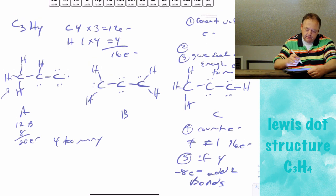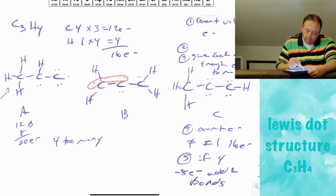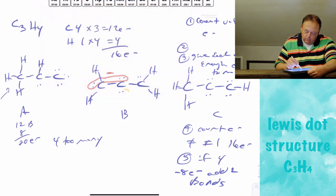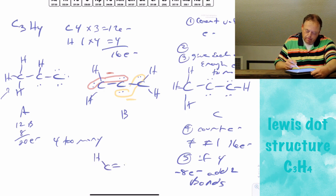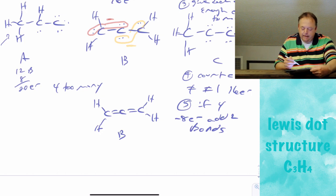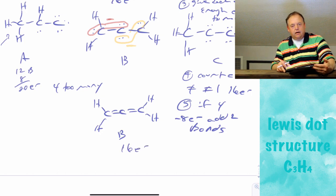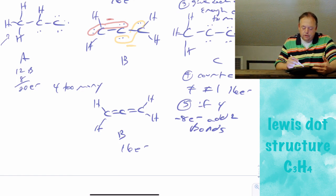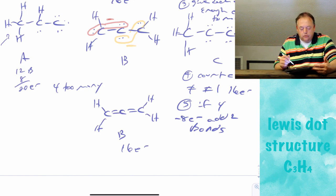Let's take structure B. We get rid of 4 lone pair electrons and add a bond, then get rid of another 4 electrons and add another bond between those 2 carbons. Structure B now has 8 bonds — 16 electrons total, the correct number. Each carbon has 4 bonds and 8 electrons, and each hydrogen has 2 electrons. So this is a valid structure.